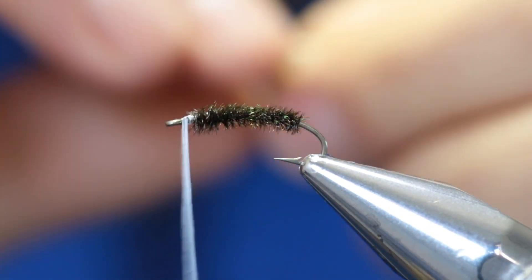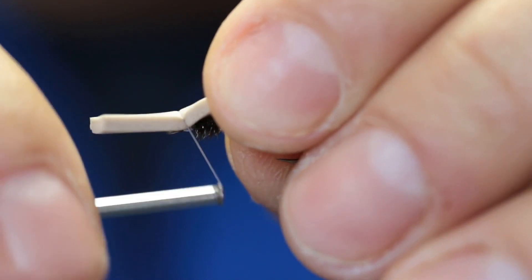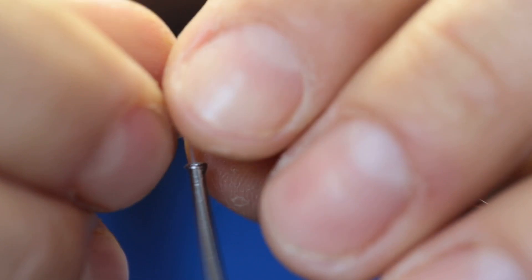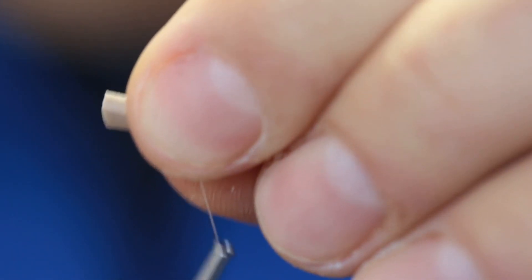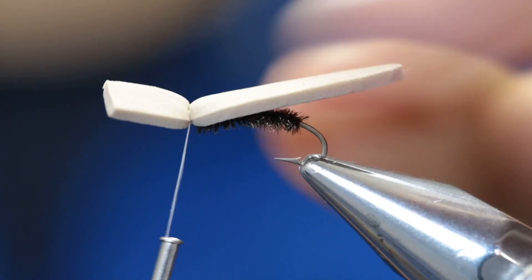Just open the thread so it doesn't cut the foam and secure it. With your thread pull down tightly like so.